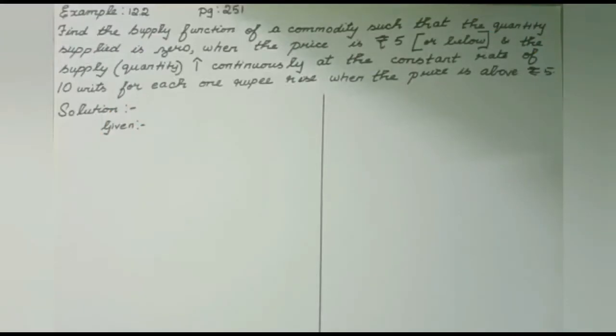Hello students, in this video I am going to explain Example 12.2 given on page 251. Find the supply function of a commodity such that the quantity supplied is zero when the price is rupees five or below five, and the supply, that is quantity, increases continuously at the constant rate of 10 units for each one rupee raise when the price is above five.